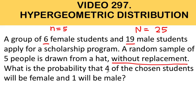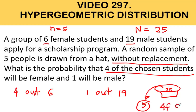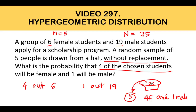What is the probability that four of the chosen students — this is our number of successes — will be female? So we want four out of six students in the population, and one male out of 19 male students will be chosen. You can imagine a hat containing 25 names, and you are going to sample five students at a time, wanting these five students to be composed of four females and one male. We consider selecting four females as success and selecting a male as a failure.